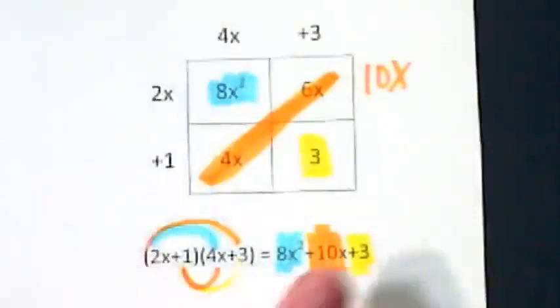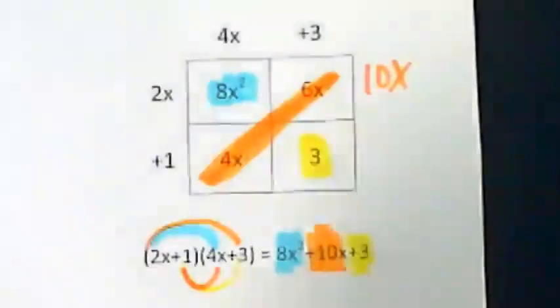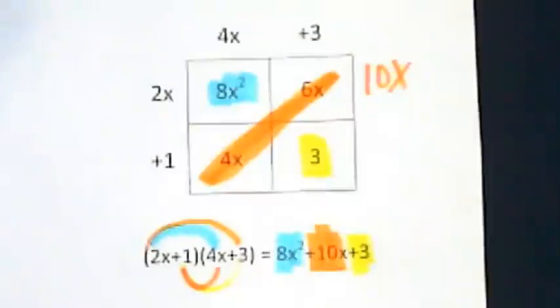Are there any numbers here that you'd see highlighted that you don't understand why those are coded with the same color? Or are you all seeing the connection between the different forms of them? Are we good? Okay.